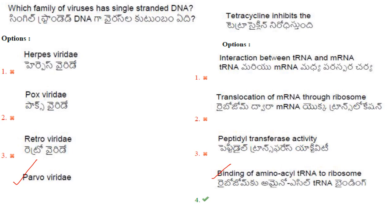Tetracycline inhibits translation by binding to the 30S ribosome subunit and preventing aminoacyl-tRNA from binding to the A site. The options presented are: interaction between tRNA and mRNA (no); translocation of mRNA through the ribosome (no); peptidyl transferase activity (no); and no binding of aminoacyl-tRNA to the ribosome — that is correct. The answer is option 4.